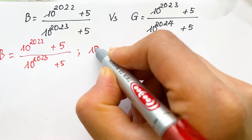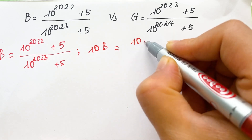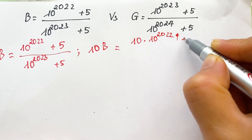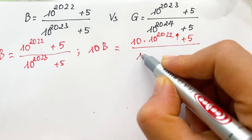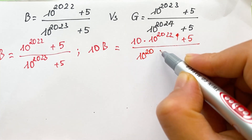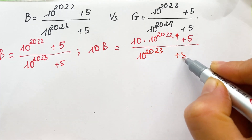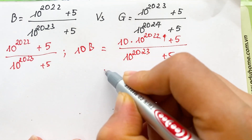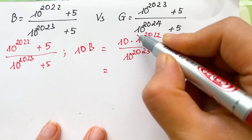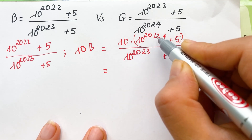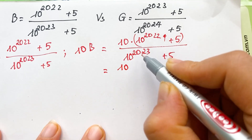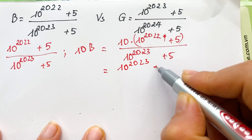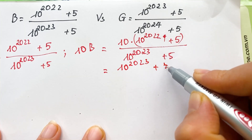So therefore we have 10B equals 10 times 10 power 2022 plus 5 over 10 power 2023 plus 5. And we can see that 10 times 10 power 2022 equals 10 power 2023, and 10 times 5 equals 50.